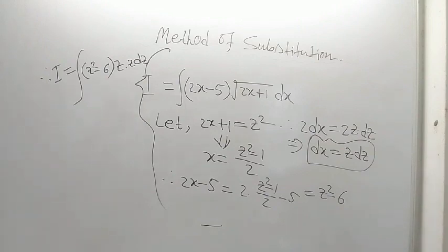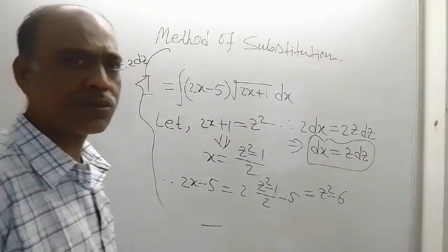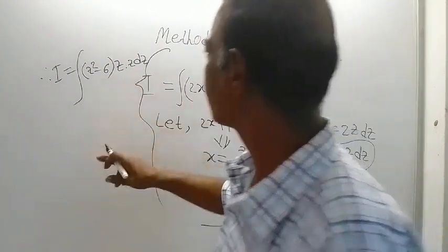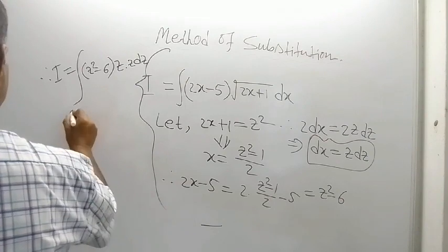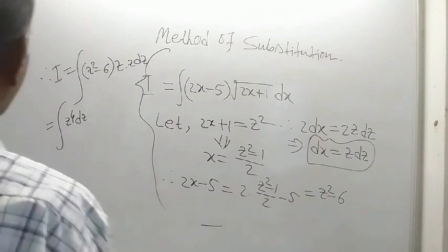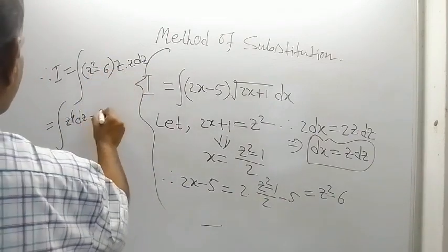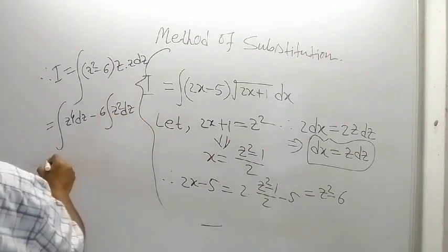Let me check whether everything is visible. Actually, there is no helping hand while I am recording this video. What is the expression here? Z squared times z squared gives z to the power 4 dz. Integration of this, minus 6 times z squared gives minus 6z² dz.